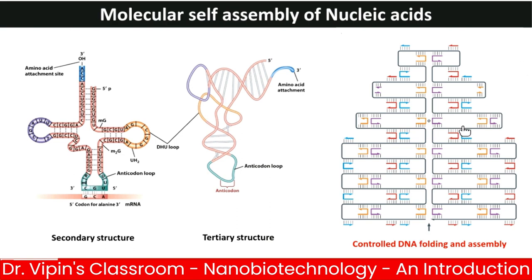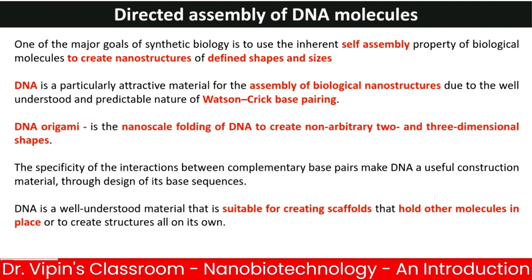In guided assembly, extra smaller DNA strands complementary to regions of the scaffold are provided, allowing it to fold only in the specific manner we want, not in its natural intrinsic manner. This is what we want in nanostructures — a defined structure for a specific function, such as moving through blood vessels or targeting a specific cell type. Guided assembly is much easier with DNA by putting in staples — smaller single-stranded DNAs that are complementary in parts to your scaffold.